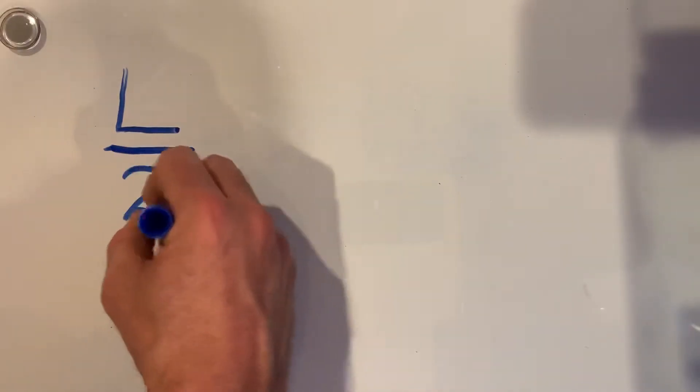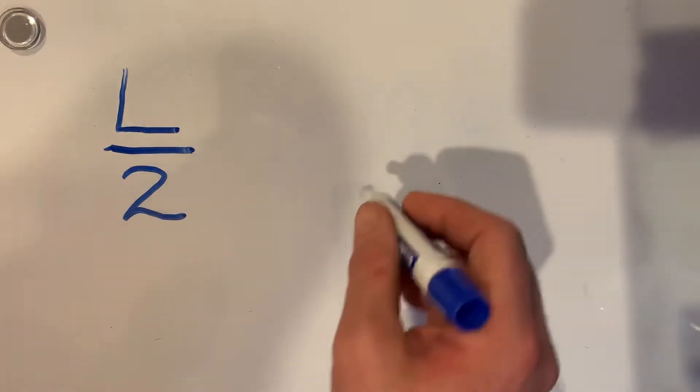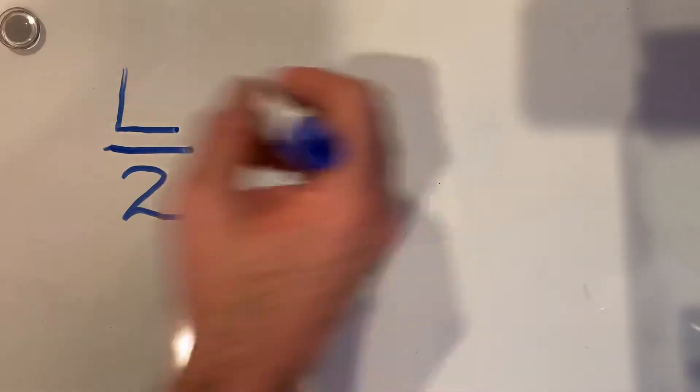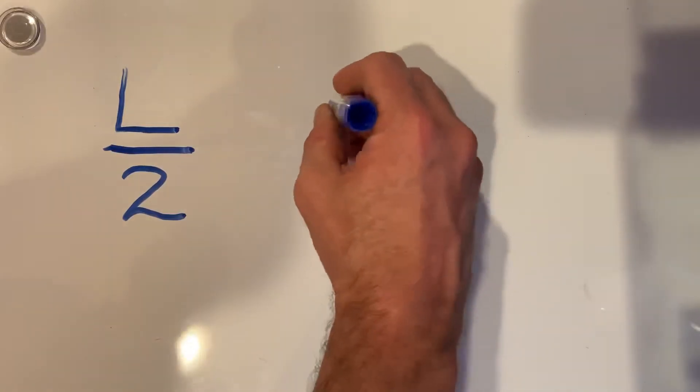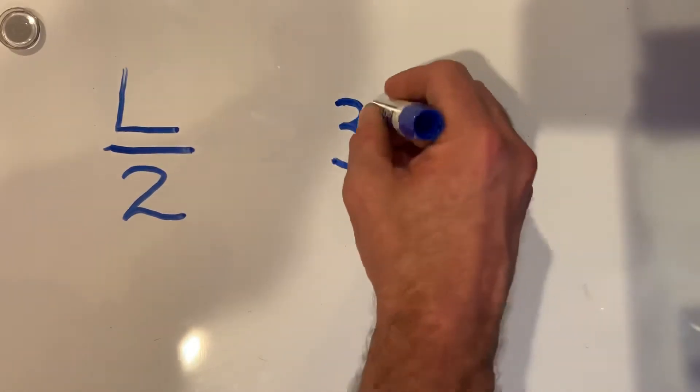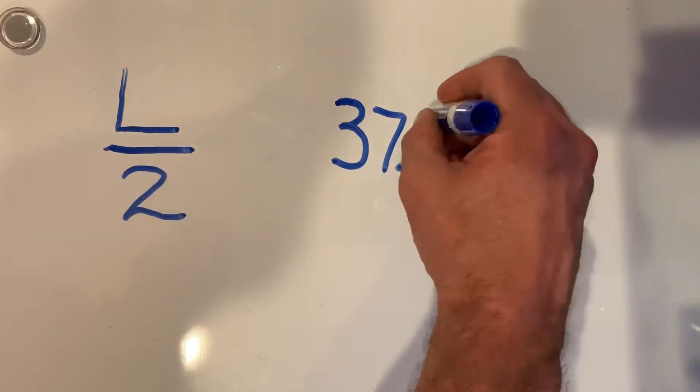then I'm going to write the length of the board divided by two. And then what do we say? It has to be at least 37 and 3 eighths. So I'm going to round it up and make it 37 and a half inches.